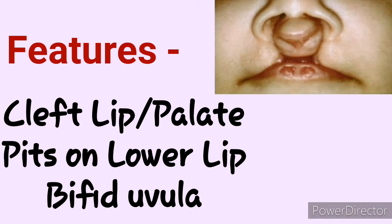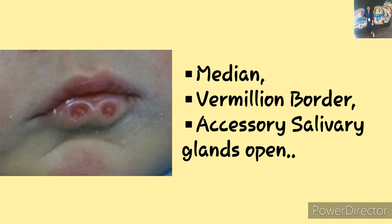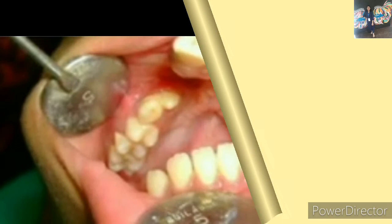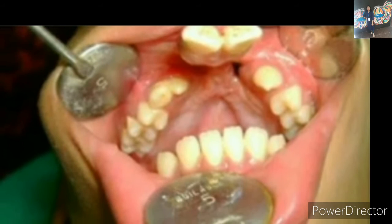Now, what are the pits on the lips? These are generally median and they are present at the vermilion border of the lip. Accessory salivary glands open into these lip pits. Now, how is dentition affected in Van der Woude syndrome? Mainly there are missing teeth — you can see some teeth are missing — mainly incisors and premolars.